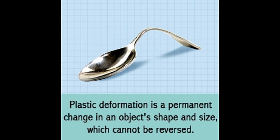Have you ever wondered why some objects regain their shape on bending, while others don't? This is because of a theory called plastic deformation, which is described in this puzzle post with the help of its definition and mechanism.